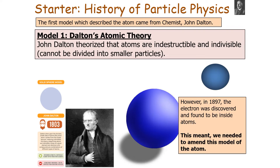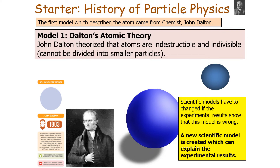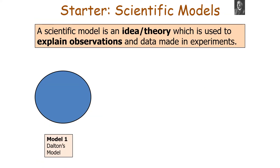However, in 1897 the electron was discovered and found to be inside atoms. This meant we needed to amend the model of the atom, because scientific models have to be changed if experimental results show the previous model is wrong. A new scientific model is created which can explain the experimental results. A scientific model is an idea or theory used to explain observations and data made in experiments.